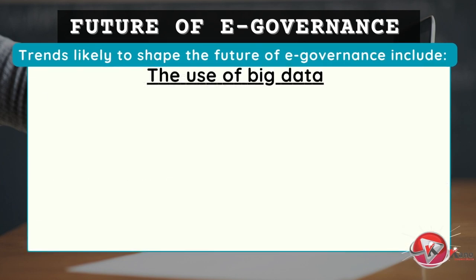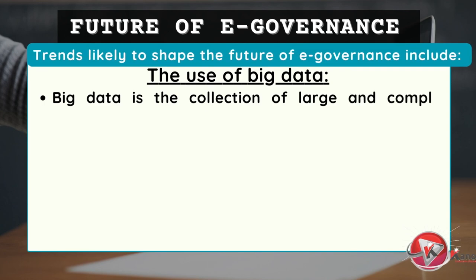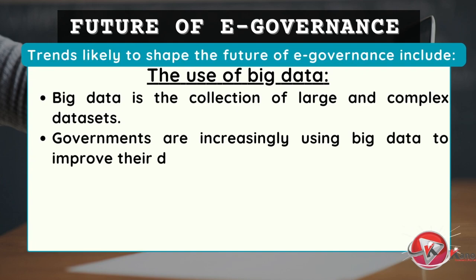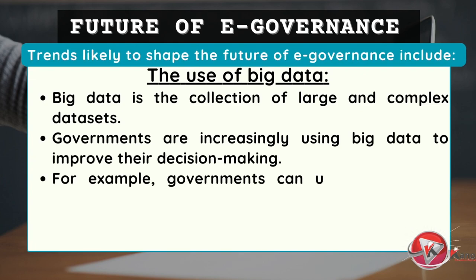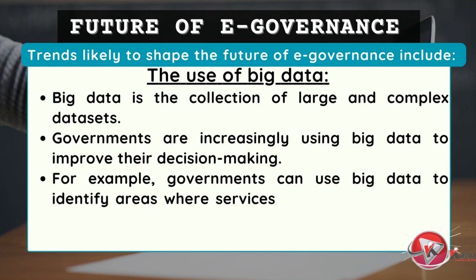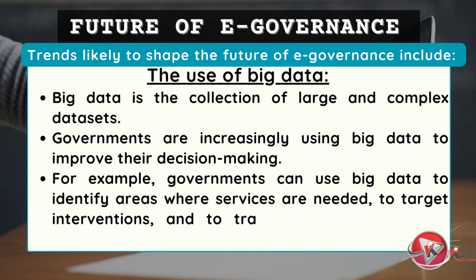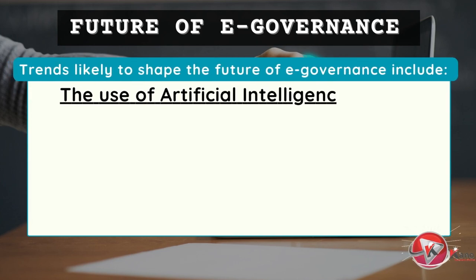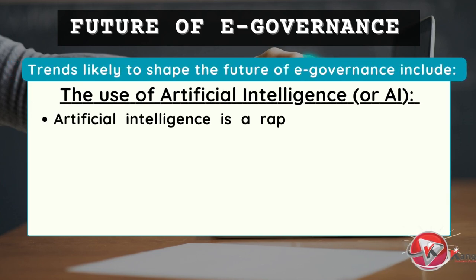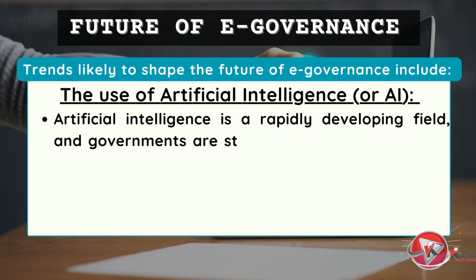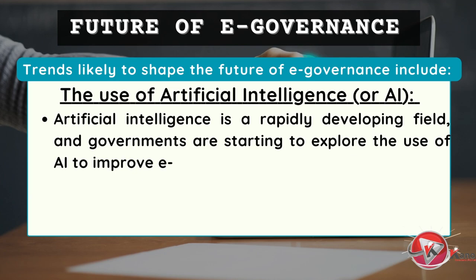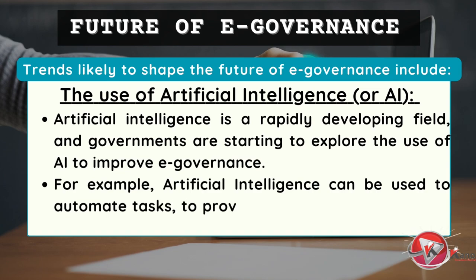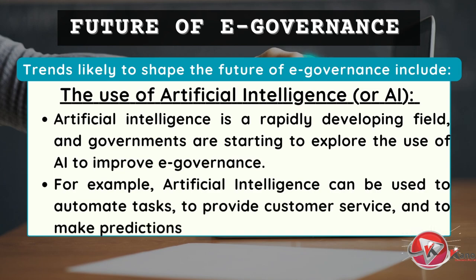The use of big data. Big data is the collection of large and complex data sets. Governments are increasingly using big data to improve their decision-making. For example, governments can use big data to identify areas where services are needed, to target interventions, and to track the effectiveness of programs. The use of artificial intelligence, or AI. Artificial intelligence is a rapidly developing field, and governments are starting to explore the use of AI to improve e-governance. For example, AI can be used to automate tasks, to provide customer service, and to make predictions.